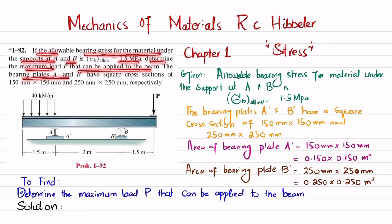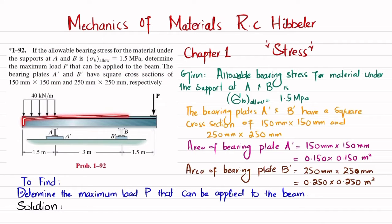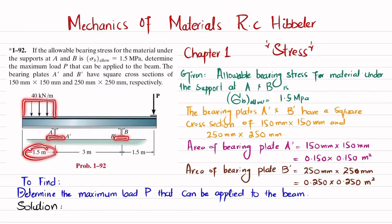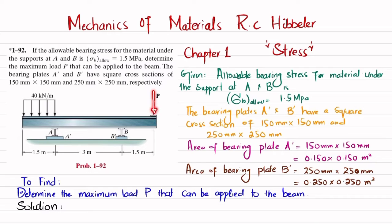The bearing plates at A and B have square cross sections of 150 x 150 mm and 250 x 250 mm respectively. You can see this is the beam having supports A and B, and there are bearing plates at these supports. There is a uniformly distributed load over a length of 1.5 m. You have to find the maximum load that can be applied on this beam.